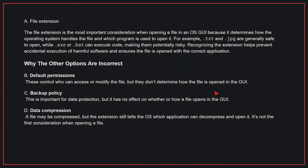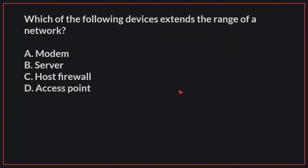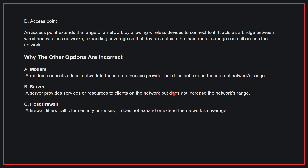Therefore, the correct answer is A. Which of the following devices extends the range of a network? The correct answer is D, access point. An access point extends the range of a network by allowing wireless devices to connect to it. It acts as a bridge between wired and wireless networks, expanding coverage so that devices outside the main router's range can still access the network.